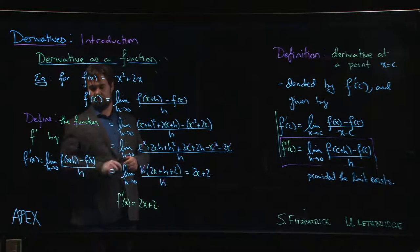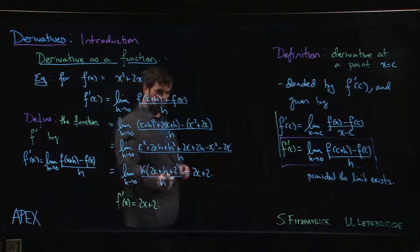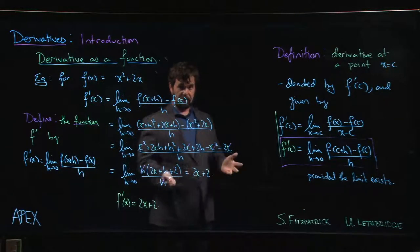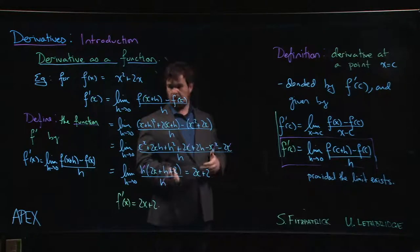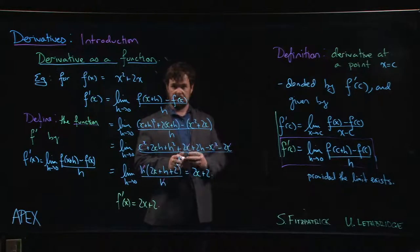But for now, the main thing we've got to realize is that we can use this limit to define a function. The limit depends on h, not on x. Once h goes to 0, h is the limit variable. Once the limit is carried out, you get something which only depends on x. There's no h dependence left. So that's the derivative as a function. We're going to talk a little bit about notation, and then we're going to do some more examples.